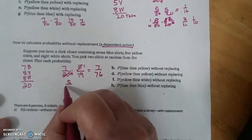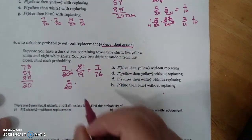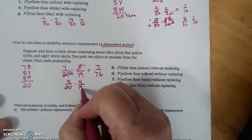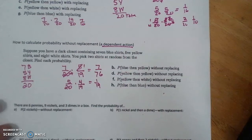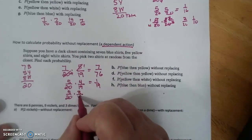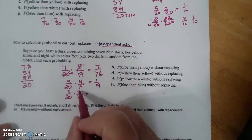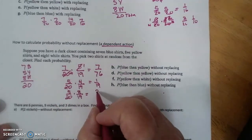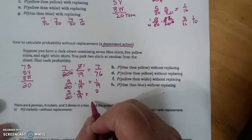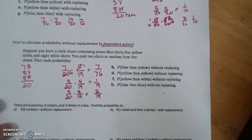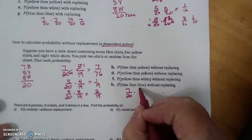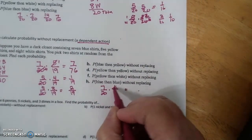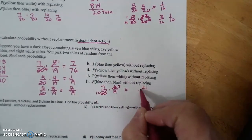Yellow then yellow. 5 out of 20. Take that shirt out of the closet. That means there's only 4 shirts left in 19. That is 1/19. Yellow then white. 5 out of 20 for the yellow. White, there's still 8 of them in there, but there's only 19 shirts. 40 divided by 20 is 2, so that's 2 over 19. Blue then blue. I have 7 blue shirts out of 20. I take 1 away and then that's 19. That is 3 and 10. 21 over 190.